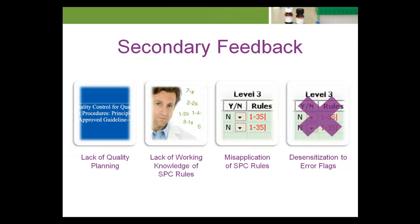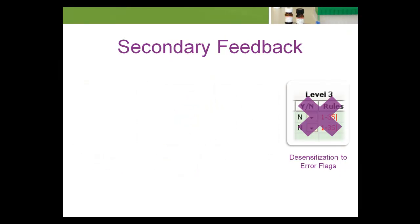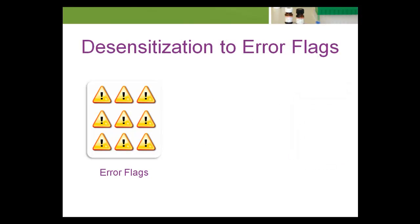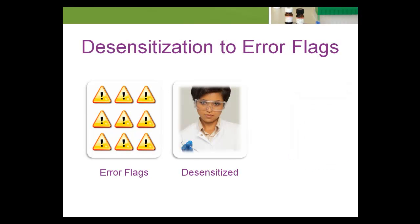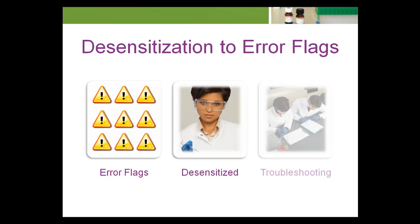Desensitization to error flags is another reason to use a secondary feedback mechanism. When error flags occur too often, bench technologists often become desensitized to the flags. Initially, they may troubleshoot every error flag, only to find that nothing is wrong. Over time, troubleshooting ceases and is replaced by the most popular and frequent response, which is to repeat the testing of the control, sometimes repeatedly, until a result falls within the limits of acceptability.